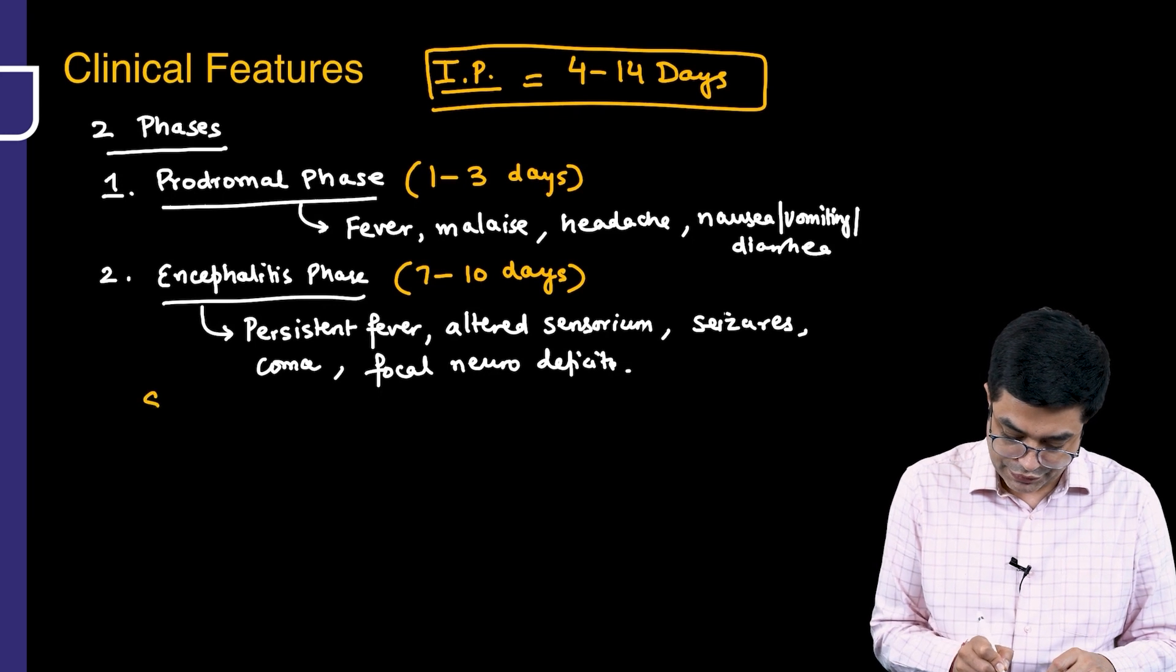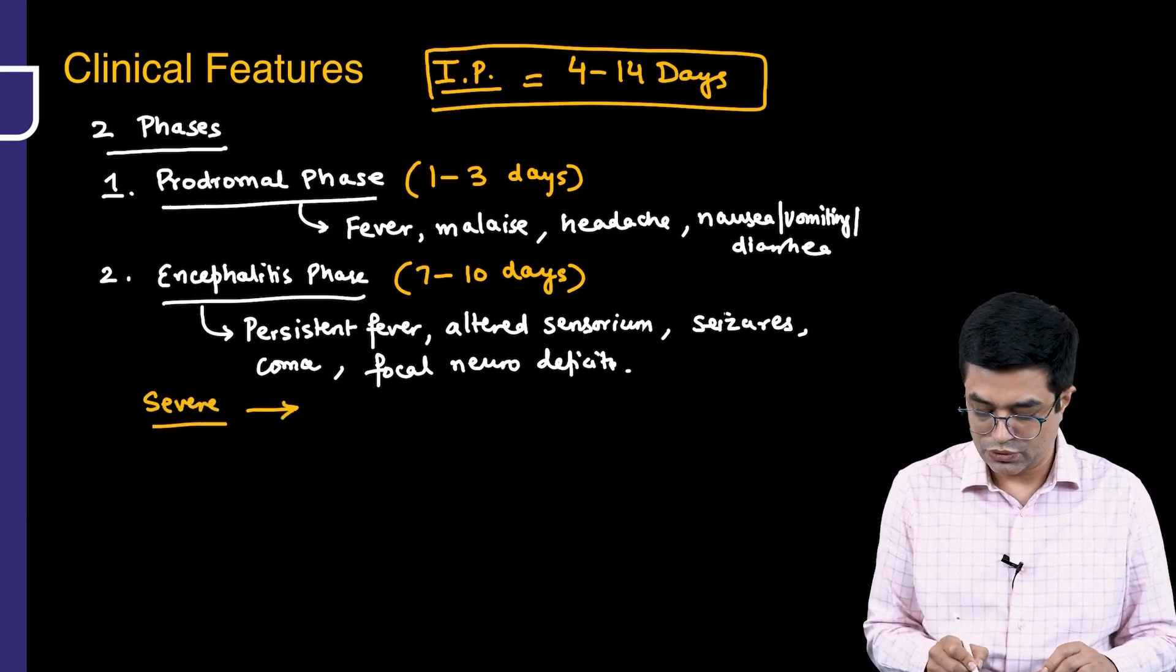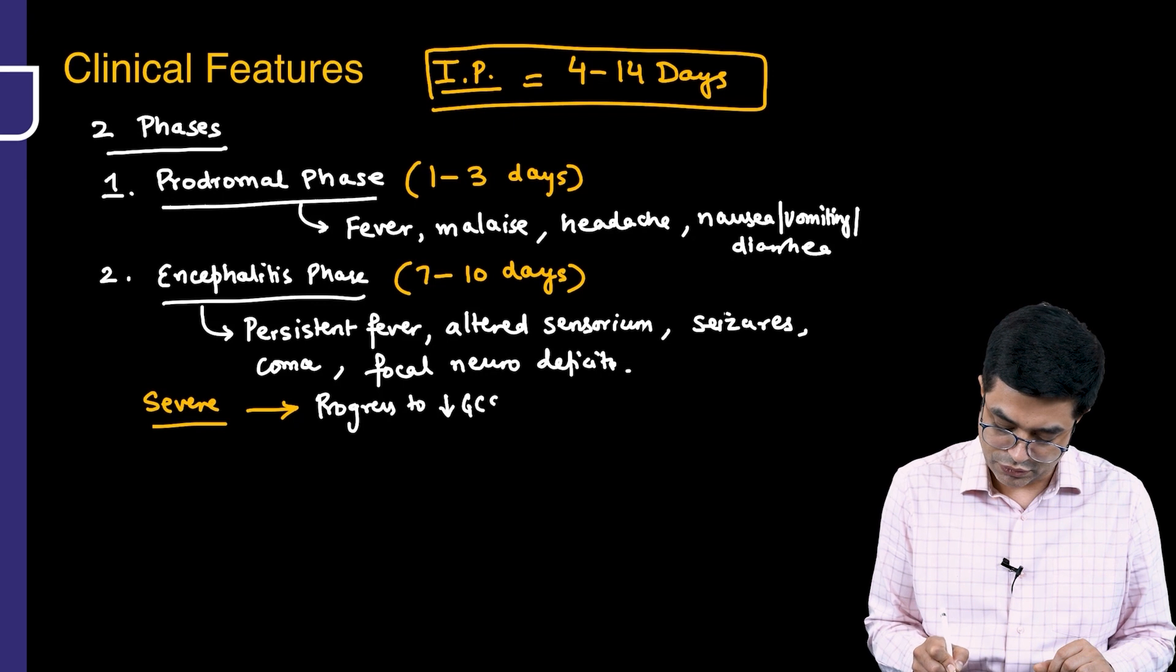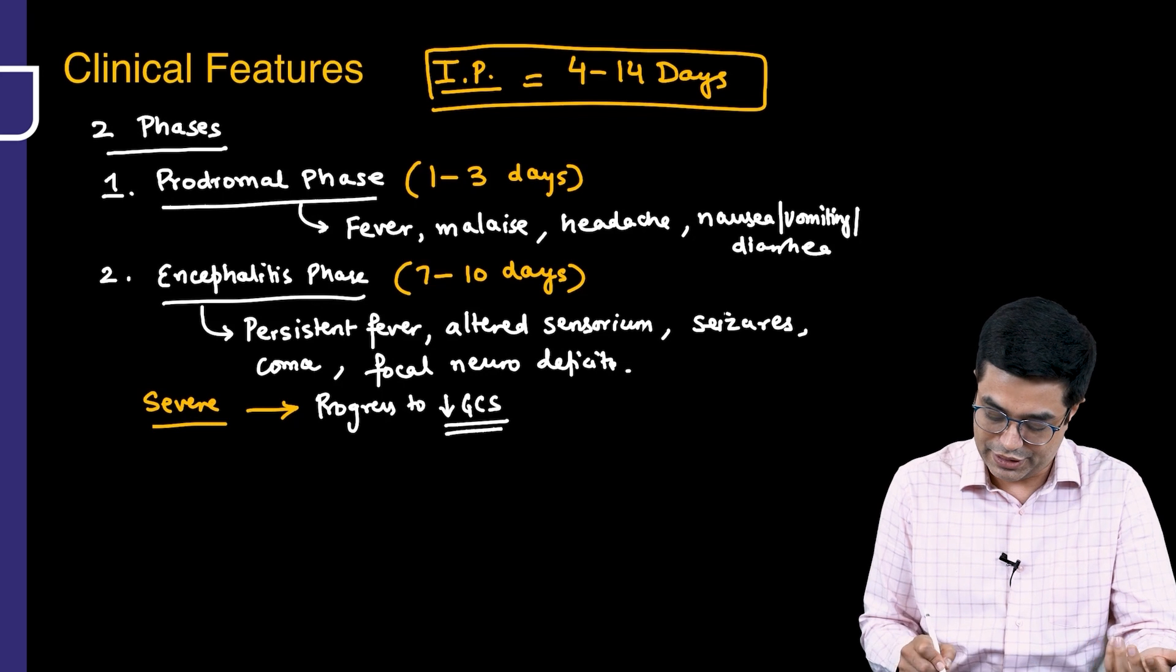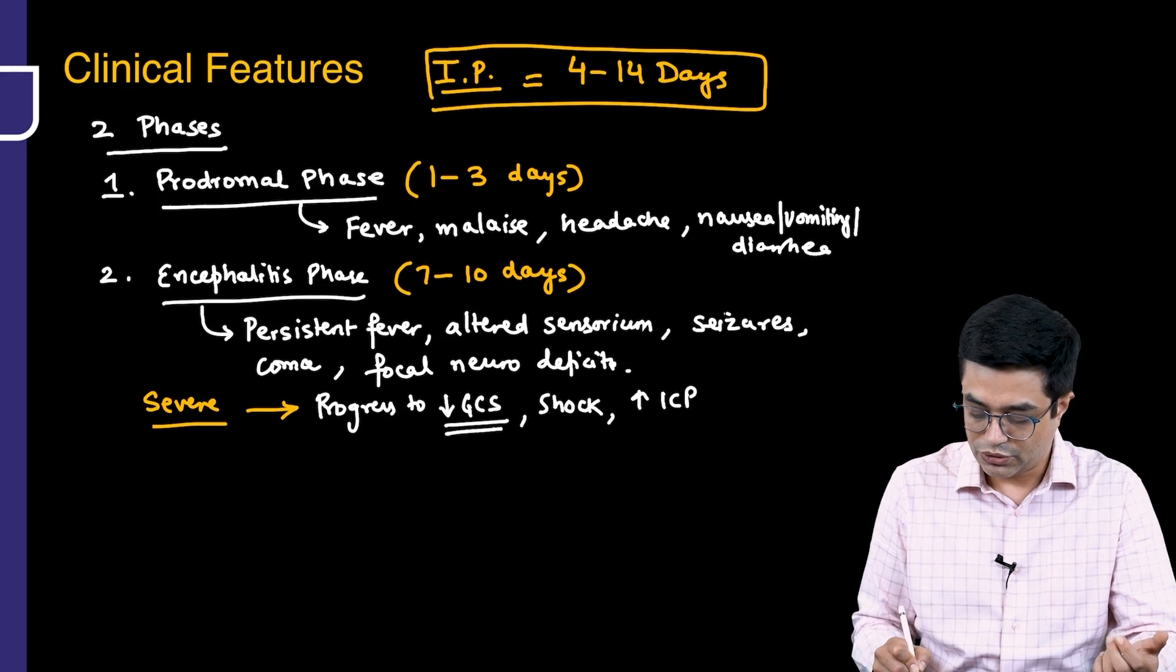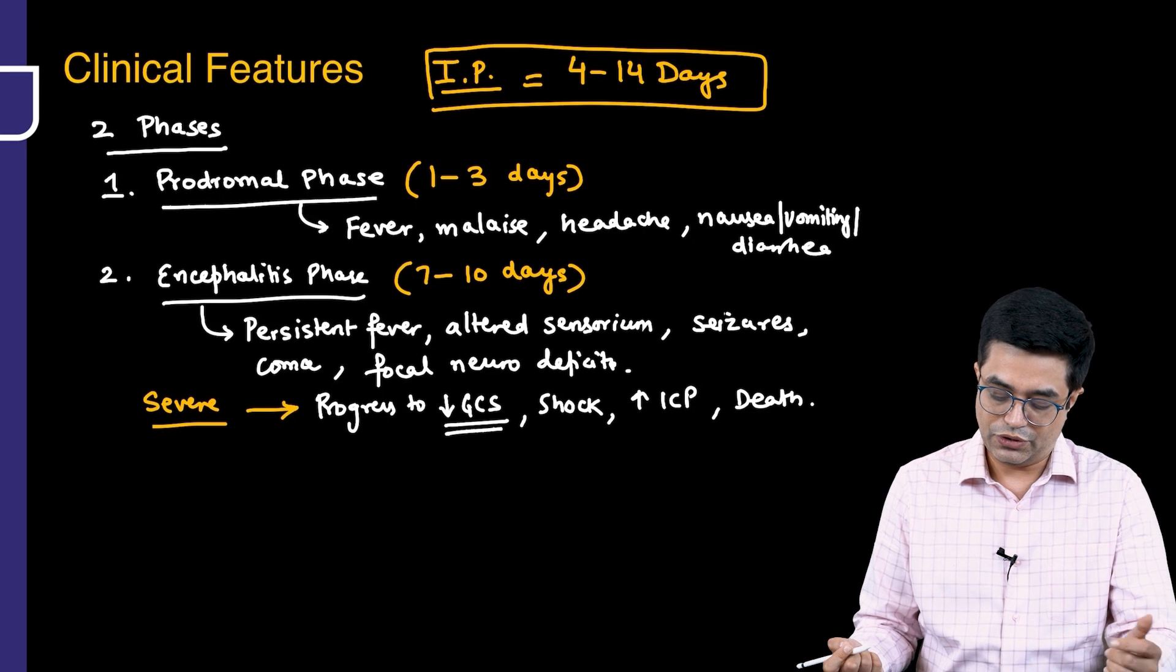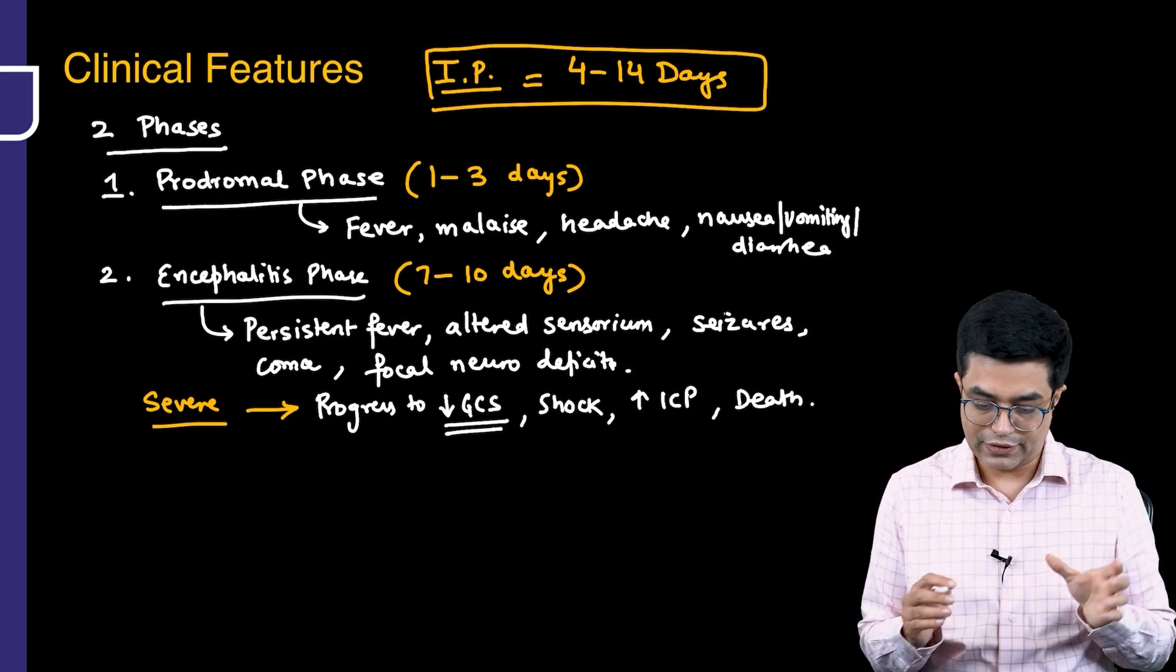In severe cases, patients will present with complications. They will progress to low GCS, where cardiac arrest can happen if not immediately managed. Shock can develop, raised intracranial pressure can occur, and even death can happen by the time the child presents to the hospital. Severe cases will progress from prodromal phase to encephalitis phase with these complications.